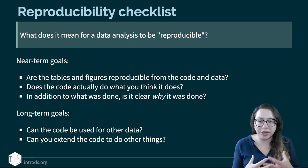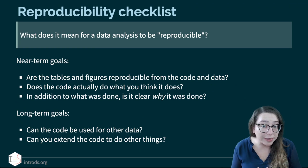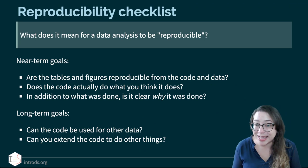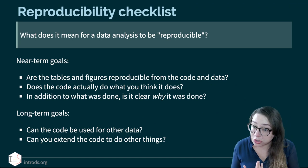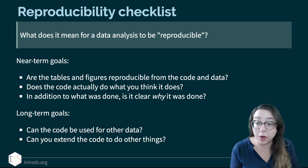Are the tables and figures reproducible from the code and data? Does the code actually do what you think it does? And in addition to what was done, is it clear why it was done? In the long term, you might be thinking about: can the code you wrote be used for other data, or can you extend the code to do other things?